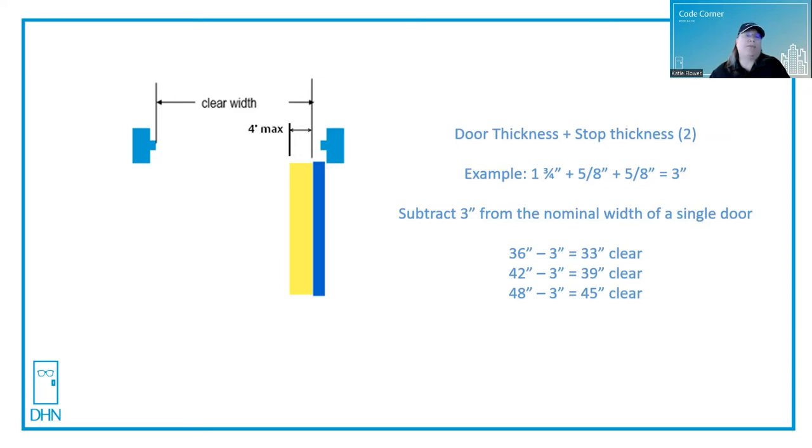Let's do a little bit of math. You take the door thickness plus the frame stop thickness times two. So for example, a one and three quarter inch thick door is most standard in this industry. You add that to the five eighths stop on each side, and that comes up with three inches.